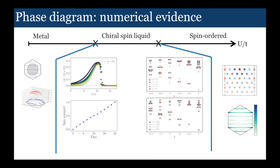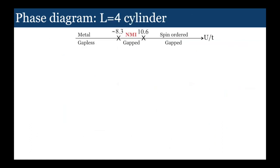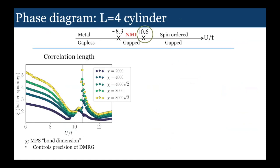What is the evidence? I'm going to walk you through both the topological part and the part showing the absence of symmetry breaking. First I'll show you the data from the L equals four cylinder. I want to argue that there's two transitions - one at about U over T of 10.6 where the 120 degree Néel order sets in, and the other at 8.3 which is the metal-insulator transition. Let's look at the Néel state first. The first thing I'm going to measure is the correlation length of the system along the length of the cylinder.